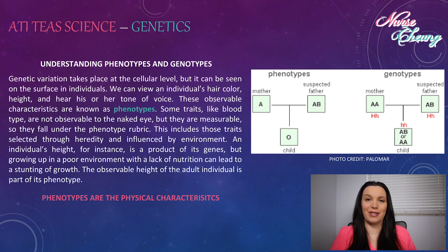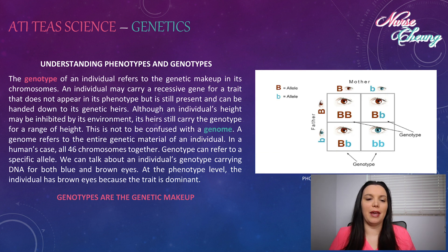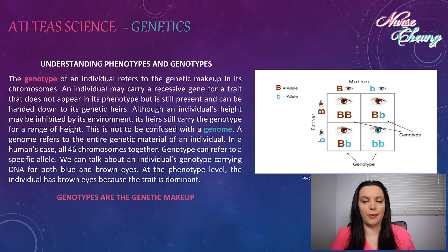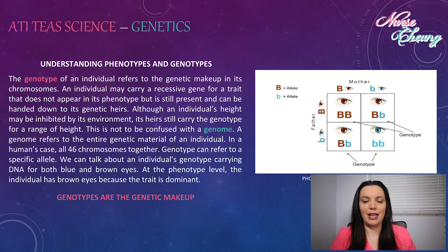Phenotypes are the physical characteristics. The genotype of an individual refers to the genetic makeup in its chromosomes. An individual may carry a recessive gene for a trait that does not appear in its phenotype, but is still present and can be handed down to its genetic heirs. Although an individual's height may be inhibited by its environment, its heirs still carry the genotype for a range of height. This is not to be confused with a genome — a genome refers to the entire genetic material of an individual, in a human's case, all 46 chromosomes together. Genotype can refer to a specific allele, such as carrying DNA for both blue eyes and brown eyes, while the phenotype shows brown eyes because that trait is dominant.